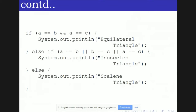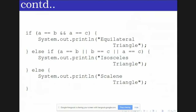We have now seen if, if-else, and if-else ladder, which control the sequential flow of execution by executing statements only when conditions are true. Moving on to the other type — loop control statements. Loop statements control execution through repetition, repeating an action as many times as required. There are three types: for, while, and do-while.